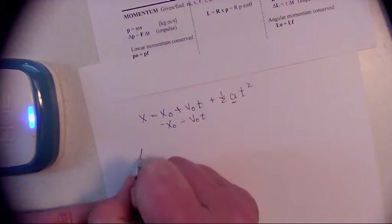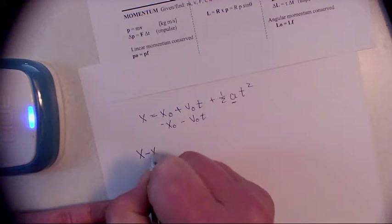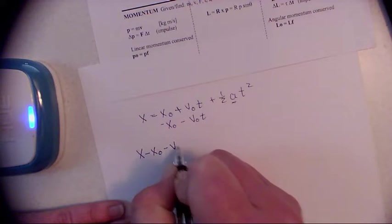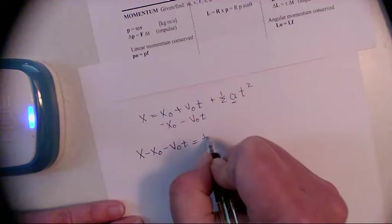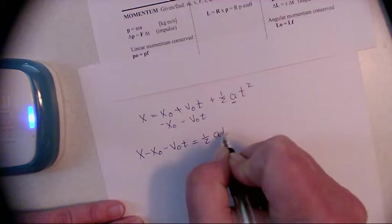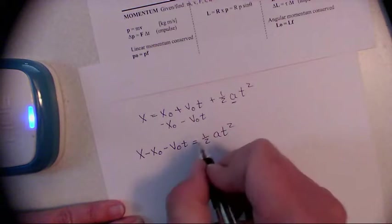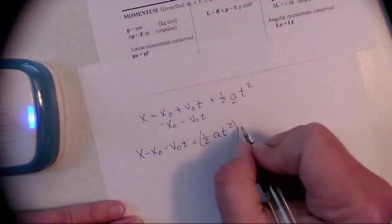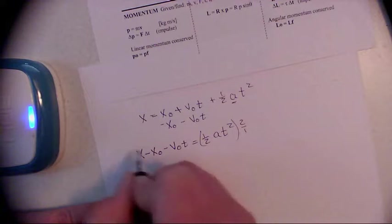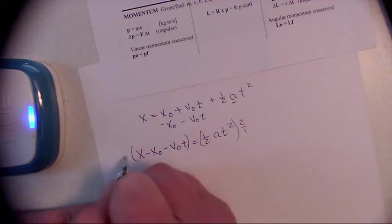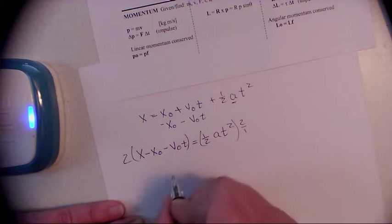That's v naught t, that means I'm going to do it on this side so we'll rewrite it over here. x minus x naught minus v naught t equals one-half at squared. That's easier for me to see it this way. I'm going to get rid of that one half so I'm going to multiply it by 2, multiply this side by 2.